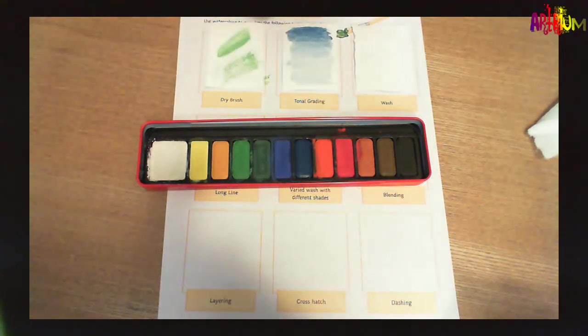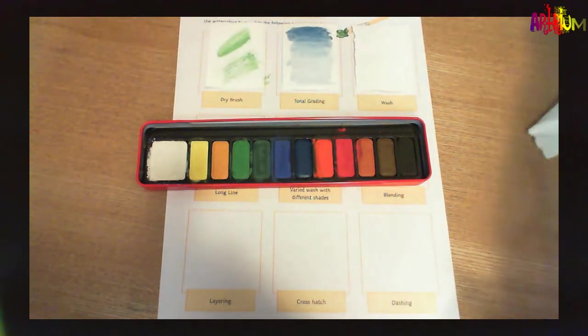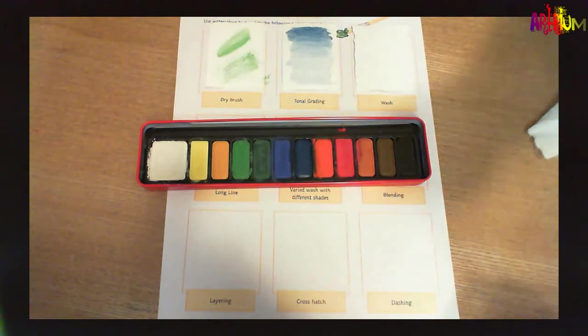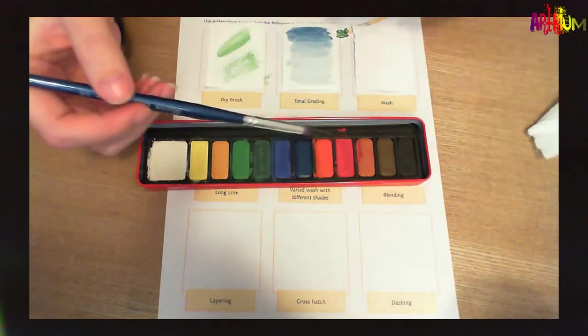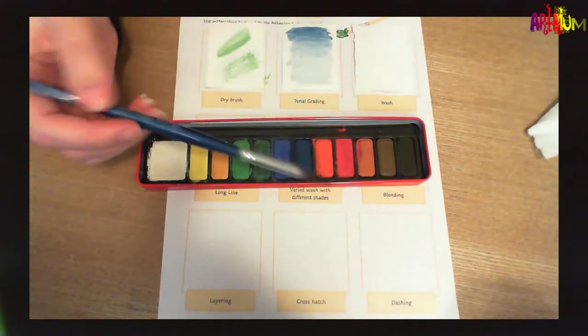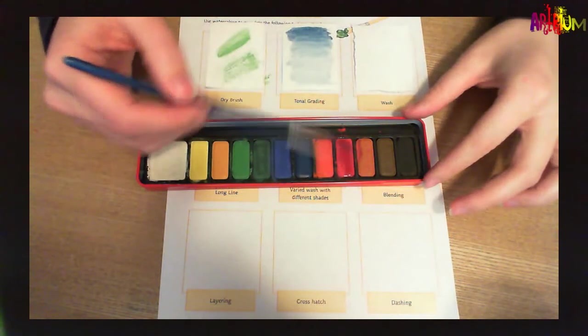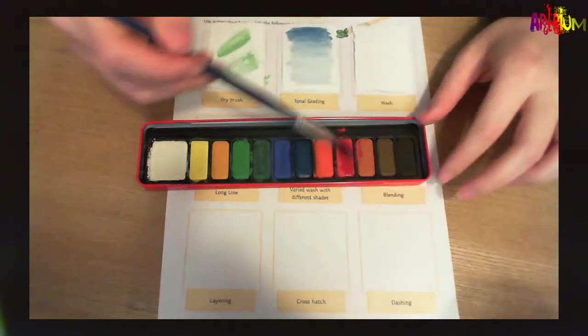Now the third technique that we're going to explore is a colour wash. This is just a really simple way to put down like a foundational light colour before you start painting over it, just to set the sort of mood of the painting.